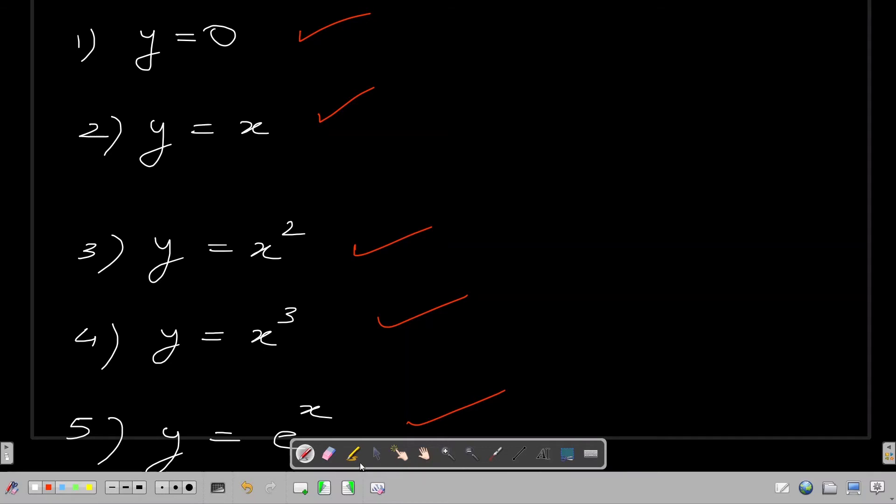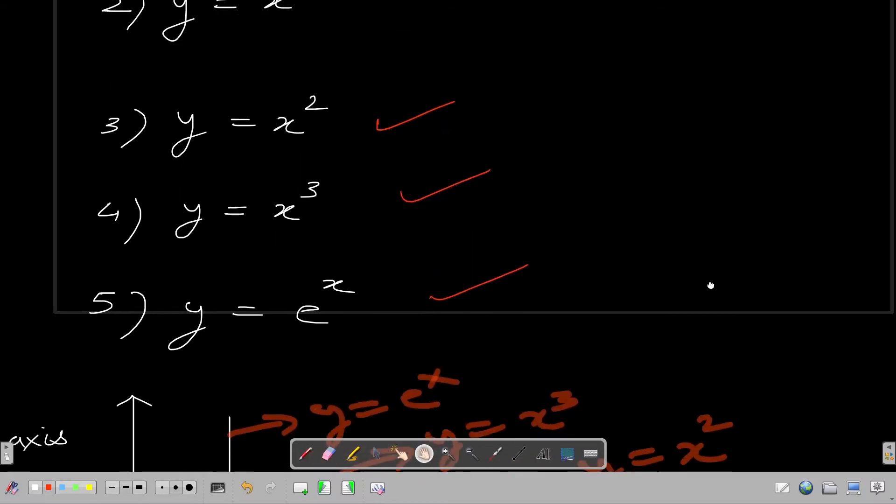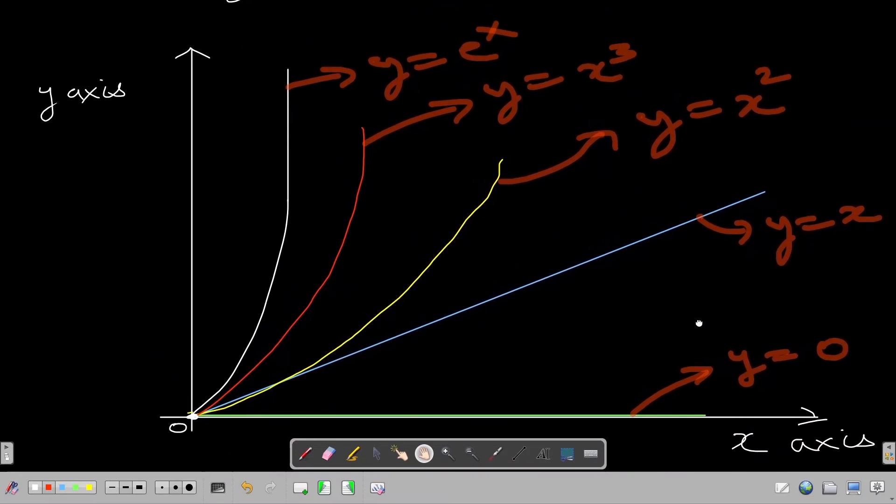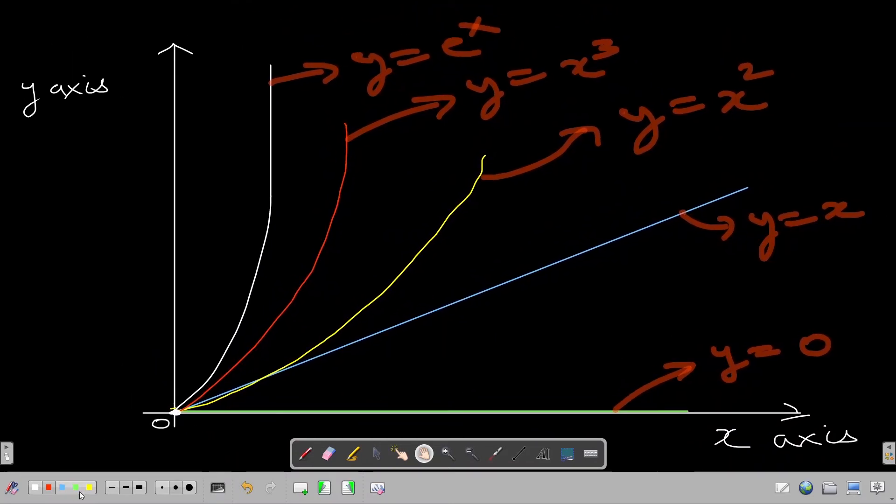If we try to draw them on the Cartesian plane, our graph would look something like this. So y equals zero is nothing but the x axis. Y equals x is this blue line. Y equals x square is this yellow line. Y equals x cube is this red line, and y equals e raised to power x is this white line.